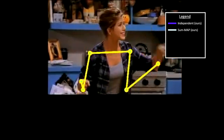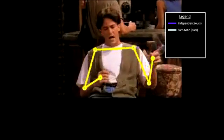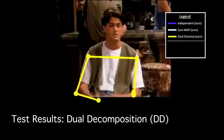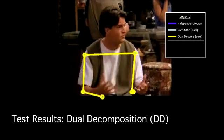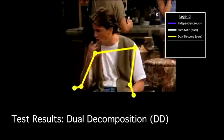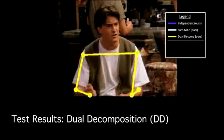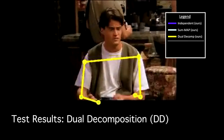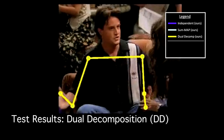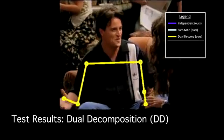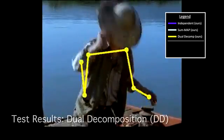The final approach we tried was dual decomposition, an iterative process that may potentially converge to the true argmax solution of the intractable model. In practice, we found that dual decomposition rarely converged, and therefore yielded outputs that were similar to those of the approximate maximum a posteriori approach.